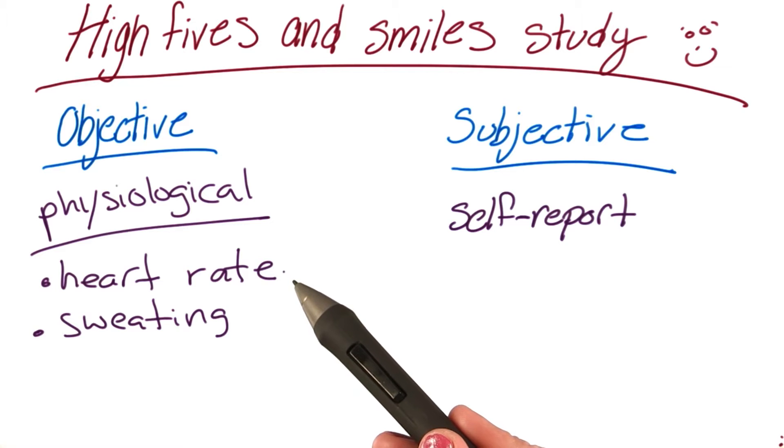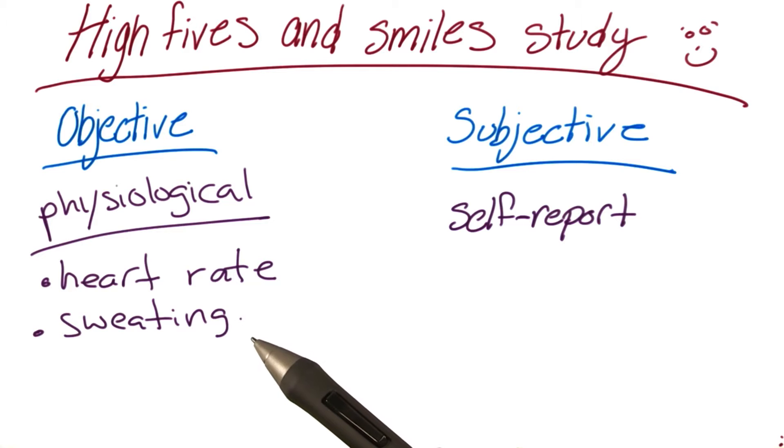For the heart rate, we can use pulse to determine heart rate. For sweating, we can measure temperature, and we can also measure the galvanic skin response.